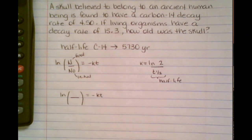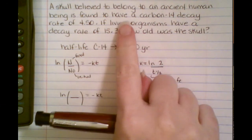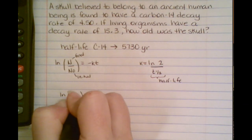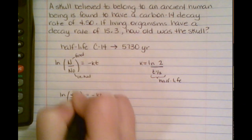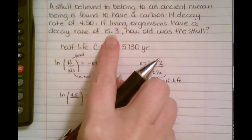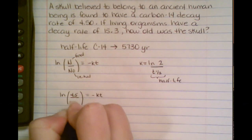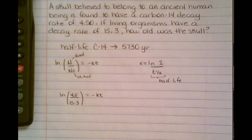So I need to know what n final is. Well, it says that when it decayed, it decayed to 4.5, so that's going to be my final. And then it says the decay rate is this right here, so this is my initial, 15.3, because when it's alive, it's initial, and when it's dead, it's final.